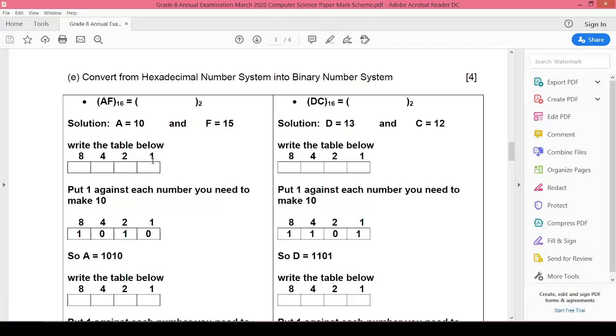You will make a box, a table with four cells or four columns, and you will write on the top 1, 2, 4, and 8. Now think of 10. What two numbers you need to make 10? We need 8 and 2. So it means we will write 1 here and 1 here, and for these two we'll put zeros.